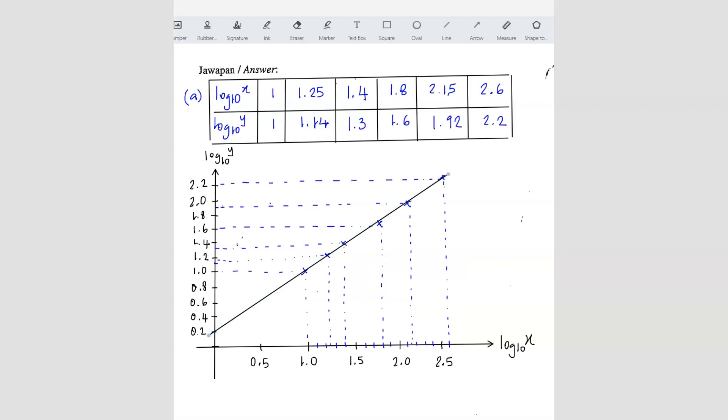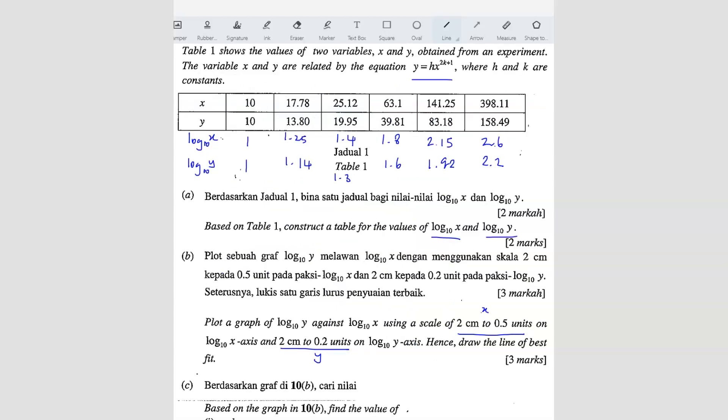It won't be so perfect, but you'll be quite close to each other. So this is your line of best fit. Now what they ask for? Question number, so this is B, right? We have already done B.